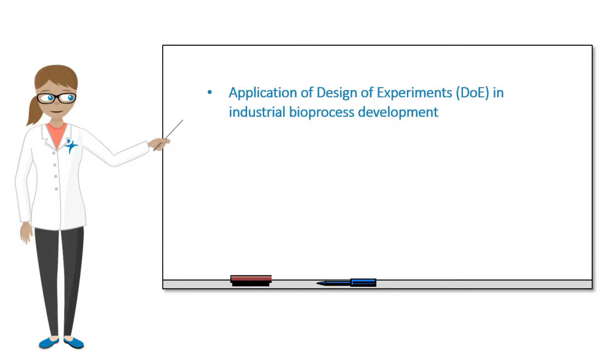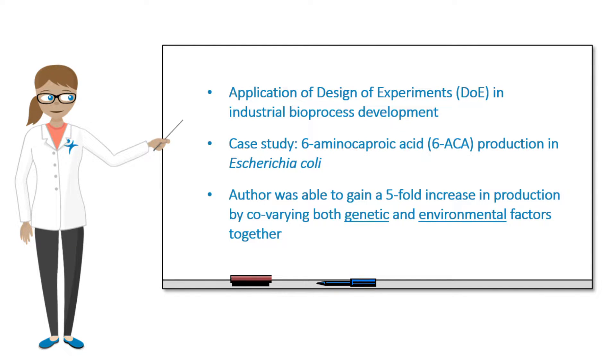You will learn through a case study about 6-amino-caproic acid biosynthesis in Escherichia coli and how the authors were able to obtain a 5-fold increase in production by co-varying both genetic and environmental factors together.